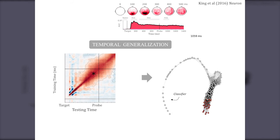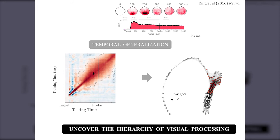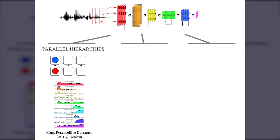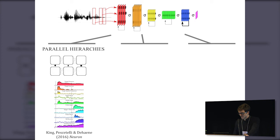In other words, we have a simple analysis that uncovers the hierarchy of visual processing stages directly from temporally resolved neuroimaging. This introduces two key computational concepts: parallel processing — decoding multiple representations at once — and hierarchies — each representation being transformed sequentially over time.